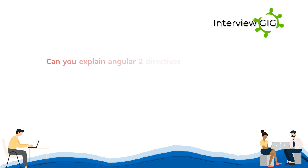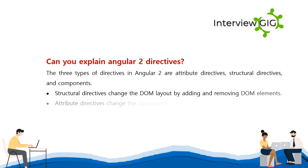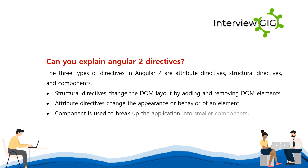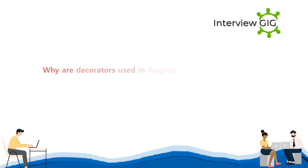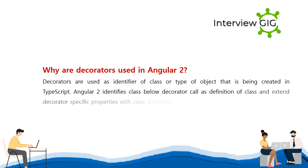Can you explain Angular 2 directives? The three types of directives in Angular 2 are attribute directives, structural directives, and components. Structural directives change the DOM layout by adding and removing DOM elements. Attribute directives change the appearance or behavior of an element. Components are used to break up the application into smaller components. Why are decorators used in Angular 2? Decorators are used as identifiers of the class or type of object being created in TypeScript. Angular 2 identifies the class below the decorator, calling the definition of that class and extending decorator-specific properties with the class definition.